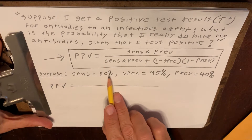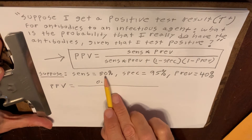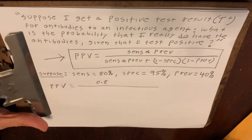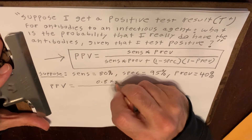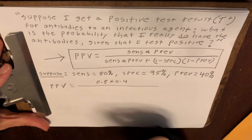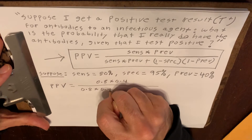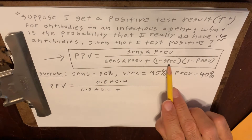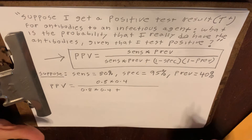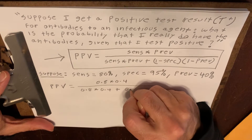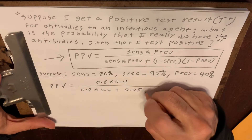We write sensitivity as a decimal: 0.8, and the prevalence is 40%, which is 0.4. We divide this by 0.8 times 0.4 plus — now you need 1 minus the specificity, so 1 minus 0.95 is 0.05 — and 1 minus 0.4 is 0.6. I use asterisks instead of an x or a dot to avoid confusion with variables or decimal points.